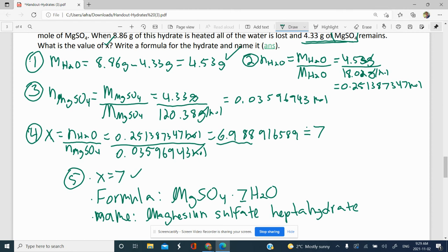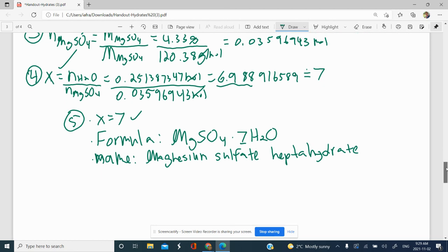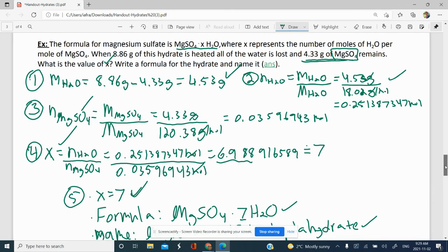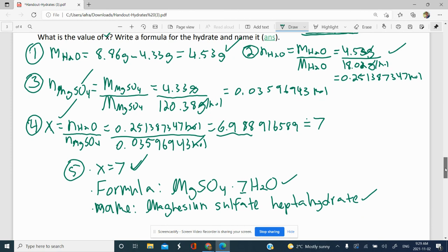Essentially what we did is we showed our work. We found the mass of water, found the moles of water, found the moles of MgSO4, the anhydrous, did our ratio to find the x value. In other words, divide by small. And then afterwards, we listed all our information. So x is equal to 7. With that, we said that here's our formula. And with the formula, we're able to come up with the name. So that's how you would solve a lab based problem for determining the formula of hydrates.